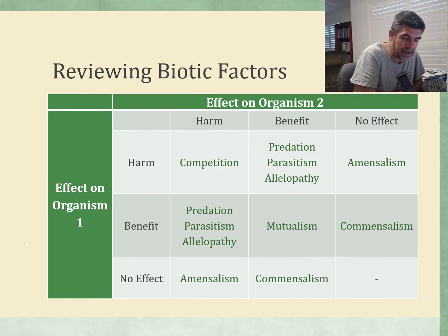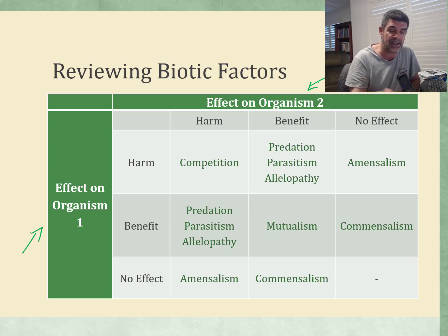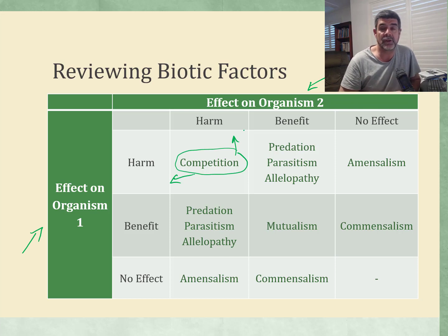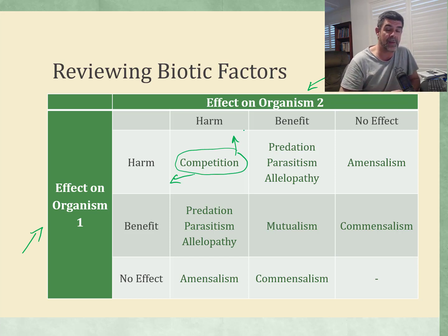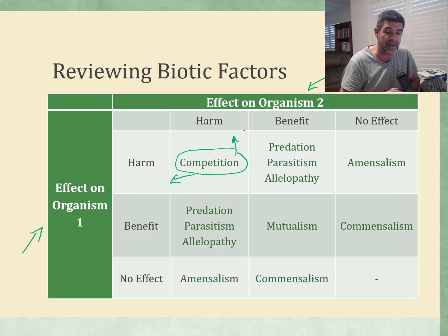So let's look at this table. We've looked at this before. We've got the effect on organism one and the effect on organism two. Any particular cell is going to reflect what is happening to organism one, which for competition can potentially be harm, and likewise for organism two. So if two organisms are competing for the same resource, the same mate, the same food, or to get away from the same predator, then in each case there's potential harm.